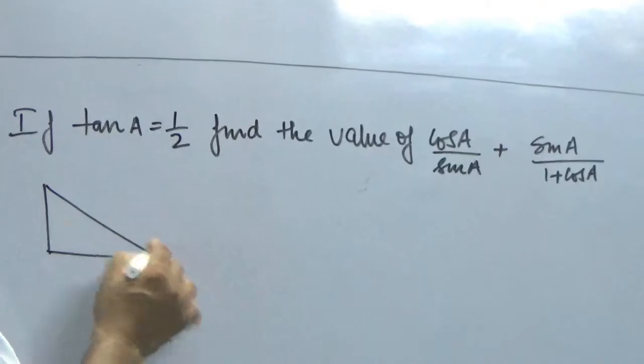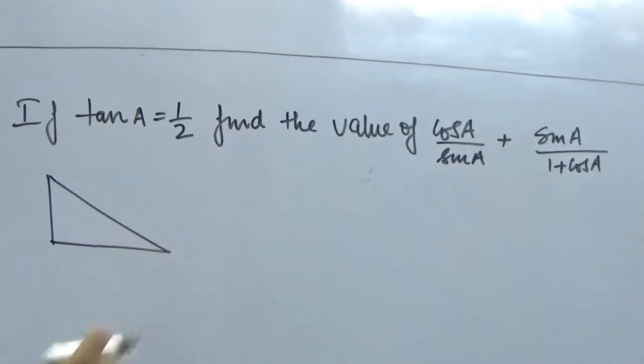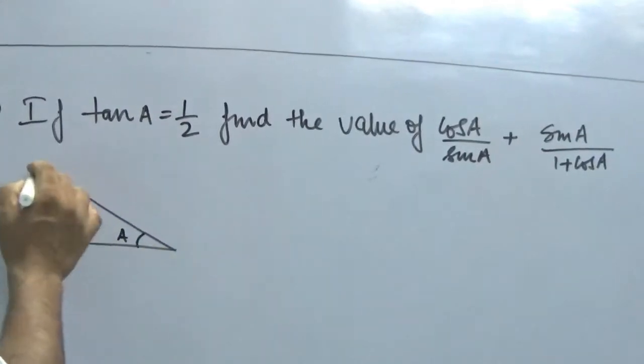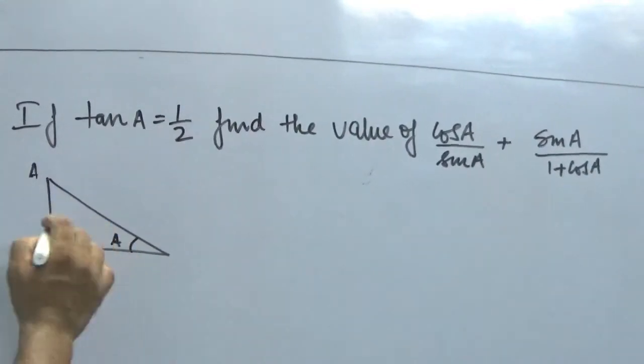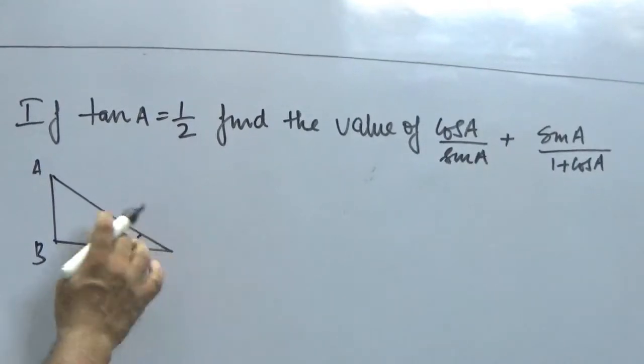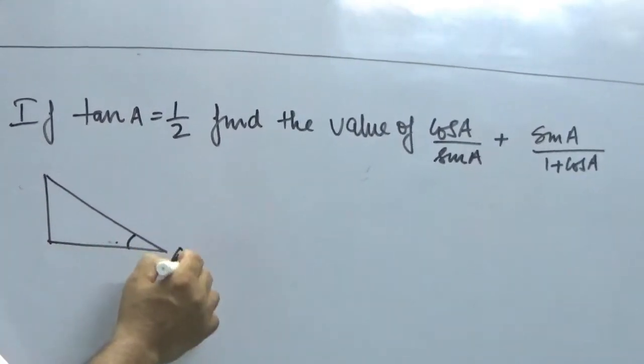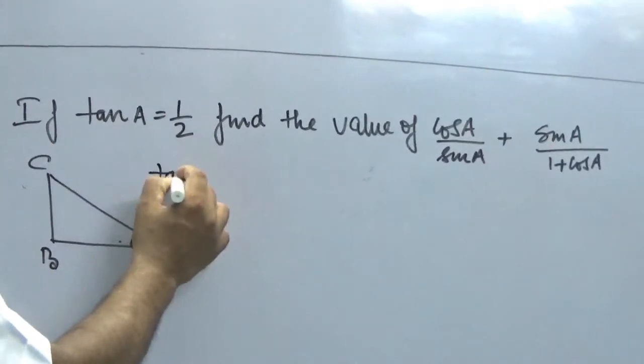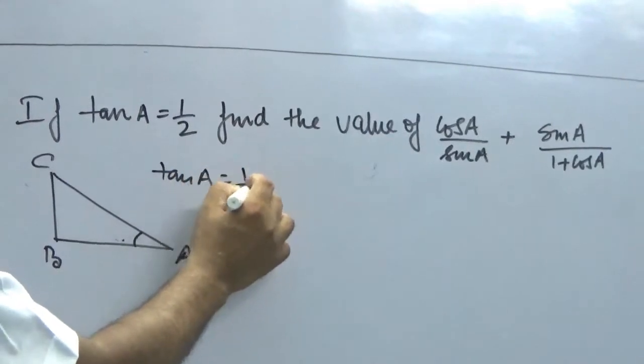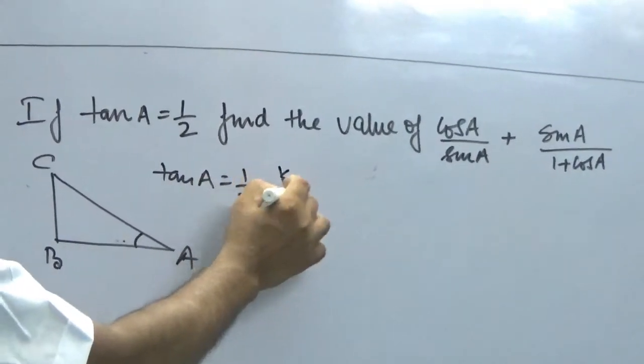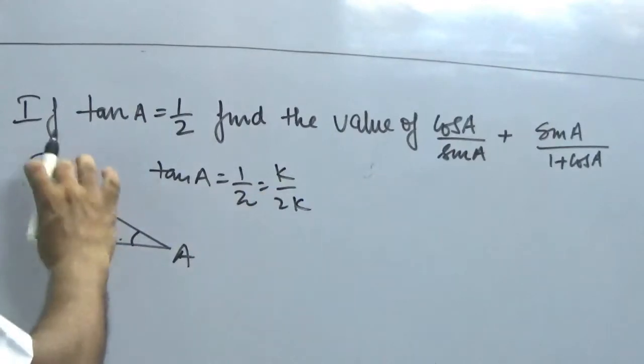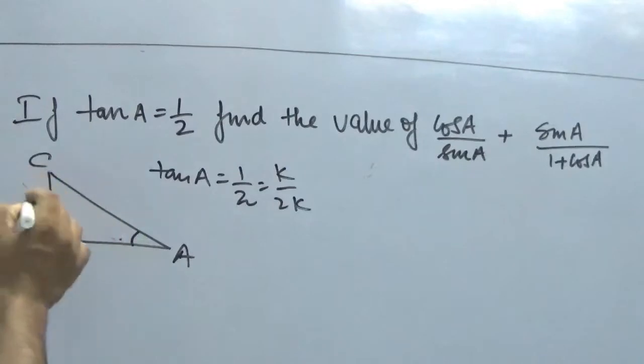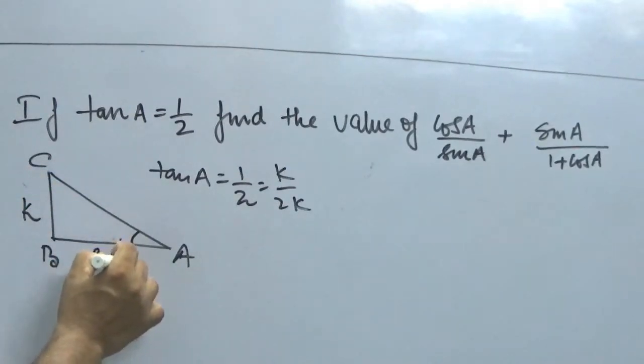One is the pretty easy method which is using the Pythagoras theorem. Let's take a triangle with sides A, B, and C. And it is given that tan A is equal to 1/2. This can be taken as k/2k. So we know that it is the opposite side and adjacent side. So we can take this as k by 2k.